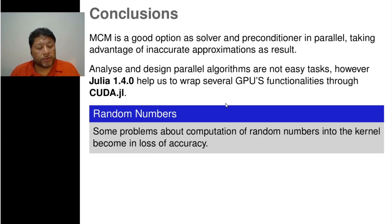Some conclusions. Monte Carlo Method is a good option for working in parallel. Designed and implementing a parallel algorithm isn't an easy task. CUDA.jl plus Julia helps us to tackle this problem. Some problems about computation of random numbers into kernel become in loss of accuracy.